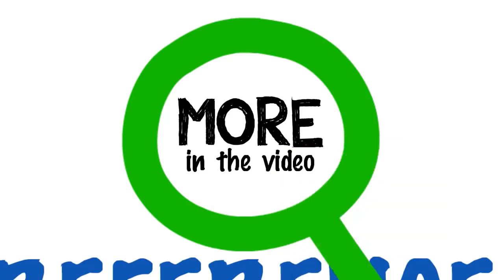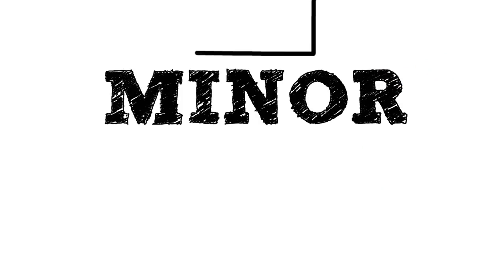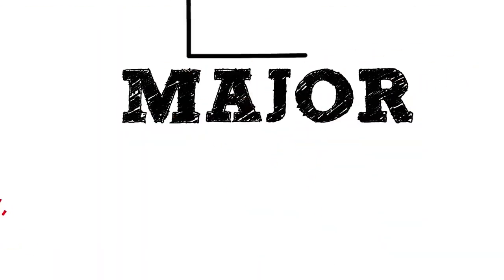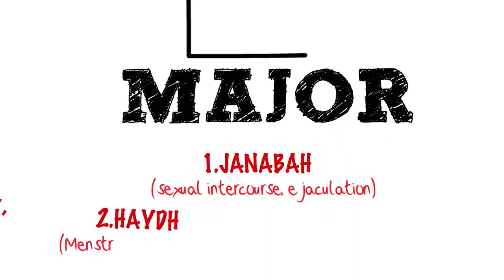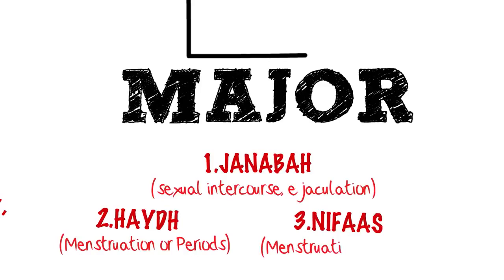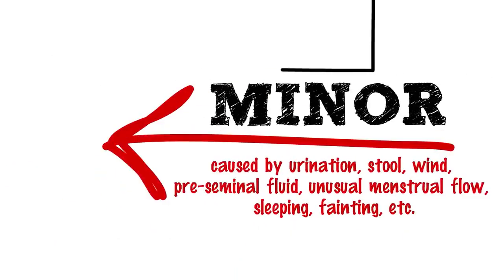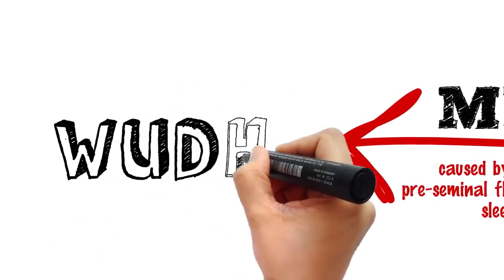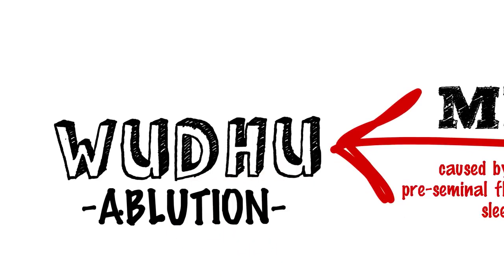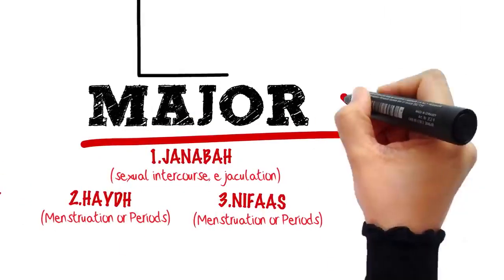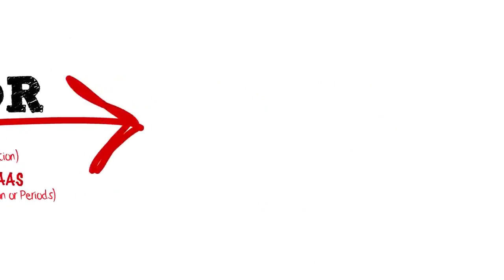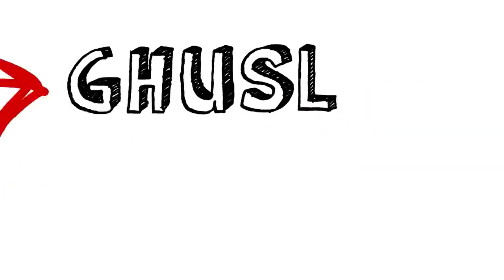So let's begin. There are two kinds of ritual impurities: the minor impurity and the major impurity which occurs as a result of janabah, haid, or nifas. To achieve tahara from the minor impurity you only need to renew your wudu or ablution, whereas in the case of major impurity you need to take a ghusl.